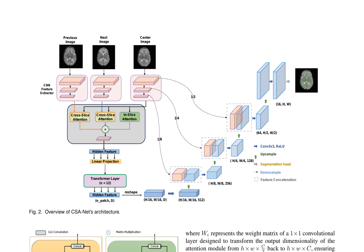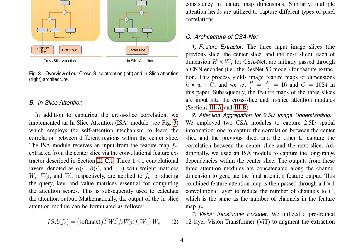The CSA-NET architecture consists of a CNN feature extractor, attention aggregation for 2.5D image understanding, and a vision transformer encoder. The feature extractor uses a ResNet-50 model to extract image feature maps from the three input slices. The attention aggregation module concatenates the outputs from the cross-slice and in-slice attention modules along the channel dimension to generate the final attention feature output.